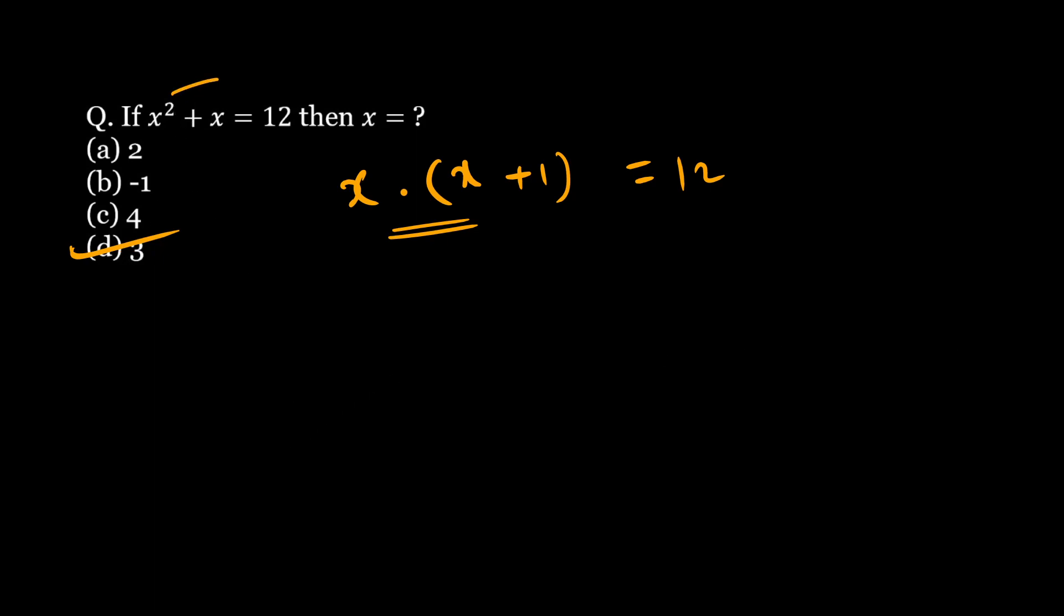So let us try to solve this one. We have x square plus x minus 12 equal to 0. I will factorize this as x square plus 4x minus 3x minus 12 equal to 0.